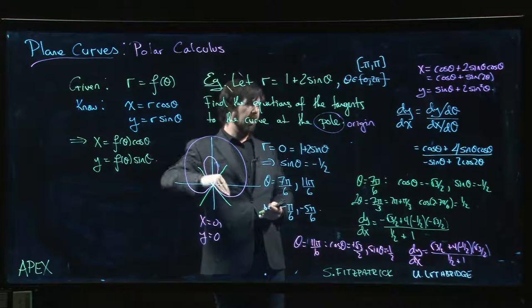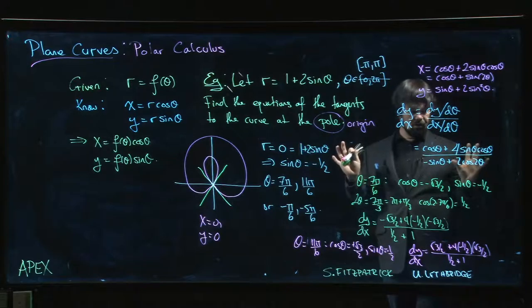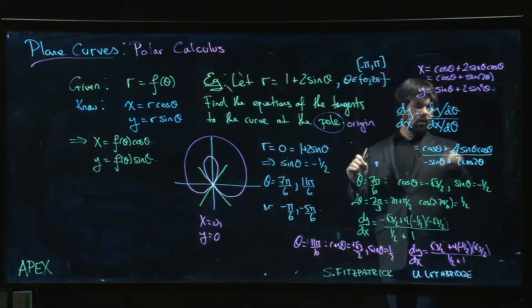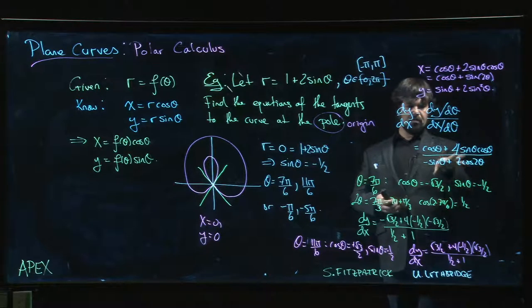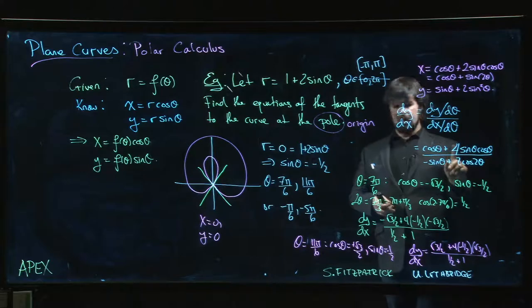And actually, maybe one thing you could do when having noticed that is you could ask yourself whether or not it's possible to mess around with trig identities here and simplify this to tan theta. Does it work? I'll leave it for you to try.